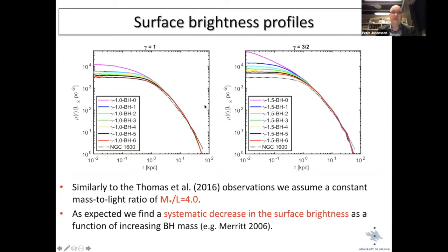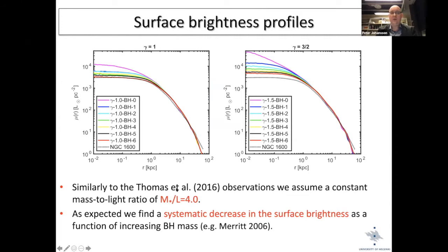The surface brightness plots show models with stellar profile density parameter γ=1 and γ=1.5. The pink line — the simulation with no black holes — shows a cuspy profile with no suppression of light in the center. Assuming a constant mass-to-light ratio of four, consistent with observations by Jens Thomas, there is a systematic decrease in surface brightness as a function of increasing black hole mass — a clear and expected trend.